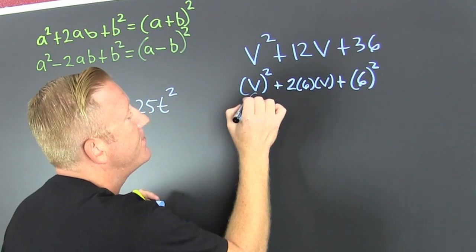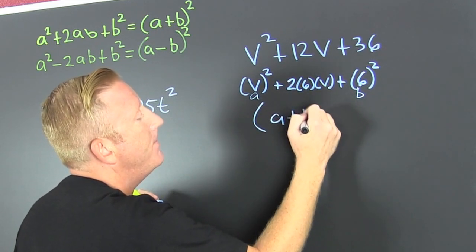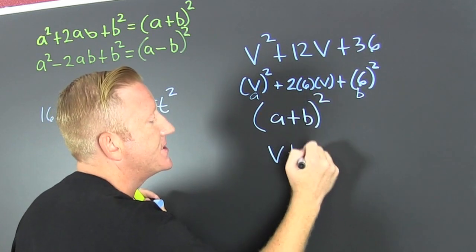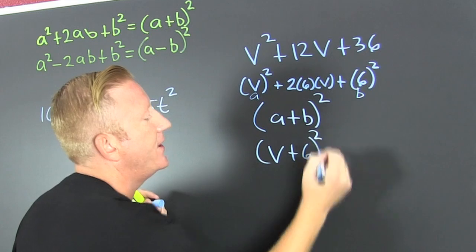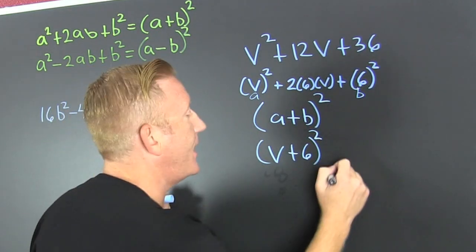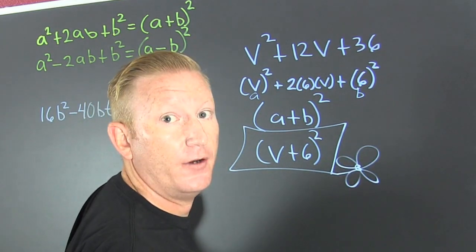So then every single time, this is my a and that's my b. This is going to be (a + b)². Or more formally, (v + 6)². But if you don't believe me, check it. Multiply that sucker out. Perfect.